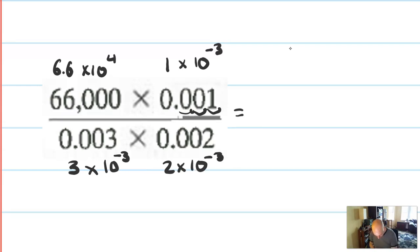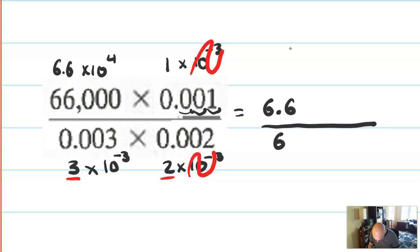So all together, what can we do? Well, why don't we do this? I have a 10 to the negative 3 on the top and bottom of a fraction. I'm going to cancel all of those out. Then I am going to multiply the 3 and the 2. So here it's going to be 6.6 over 6. And I have a 10 to the 4th.